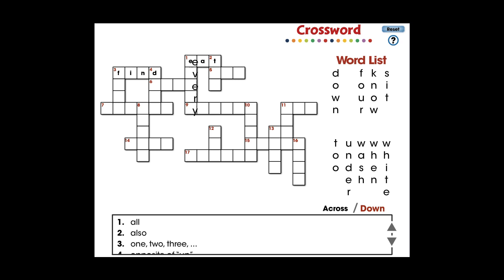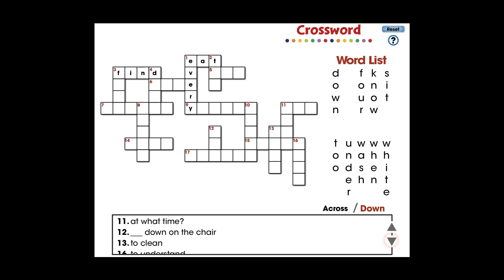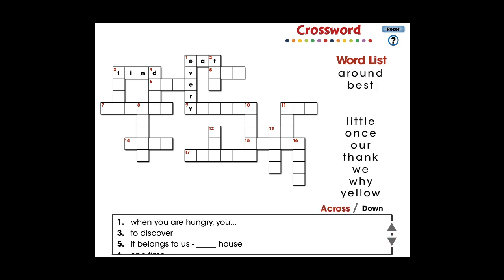Drag a word from the list to its correct position in the puzzle. Use the arrows to scroll through all the clues. Switch between across and down clues and words. Visit ccpinteractive.com for extended versions of our products and to watch more demo videos.